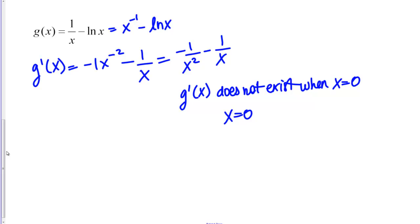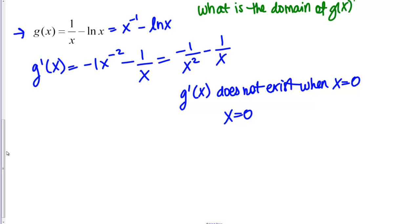Critical points must be points actually in the domain of the function. Looking back at g(x) = 1/x minus ln(x): 1/x is defined for all real numbers except x = 0, but ln(x) is only defined for x > 0. So the domain of g(x) is just x > 0, or the interval (0, ∞).